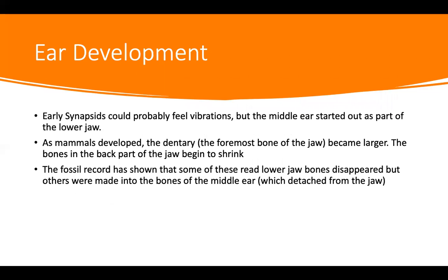The early synapsids could most likely feel vibrations in their jaw and probably used that as a signal for what to eat. But looking at bones, we figured out that the middle ear started out as the back part of the lower jaw — the dentary, where all the teeth are. The back part of the jaw started shrinking as the front part got larger. The fossil record shows that as time went on, the front part of the jaw got more pronounced with teeth, the back part got smaller, broke away, and formed the bones that are the middle ear.